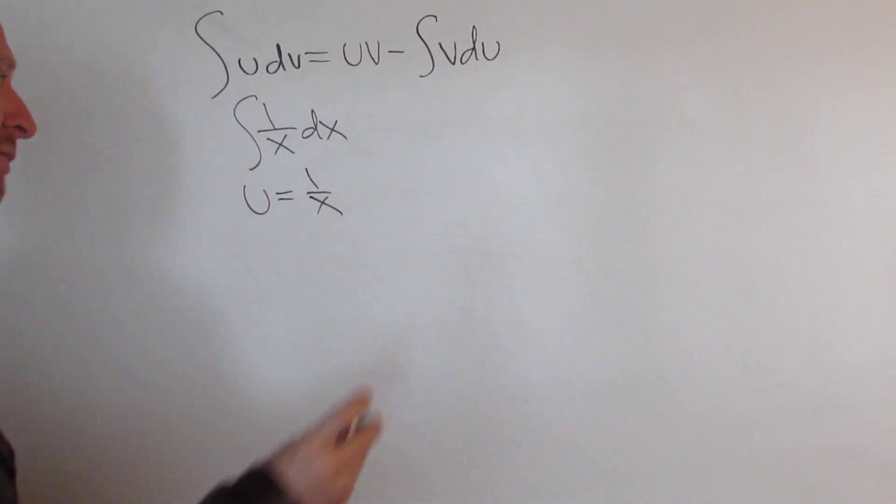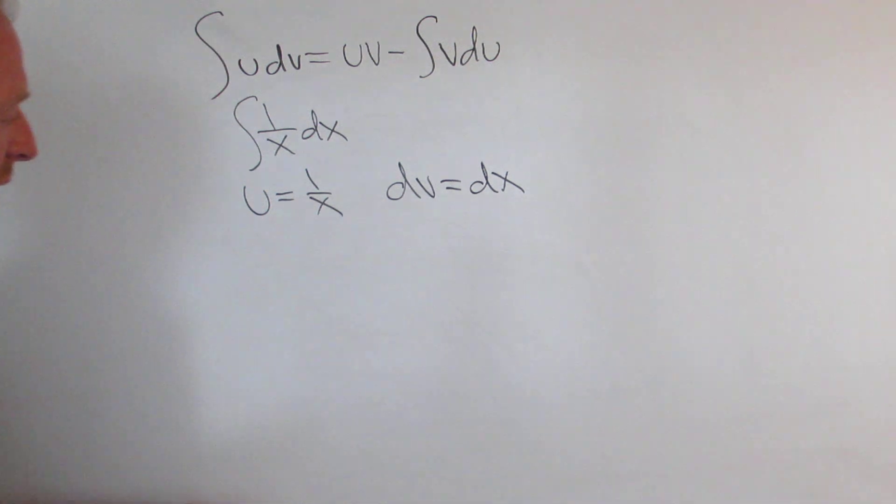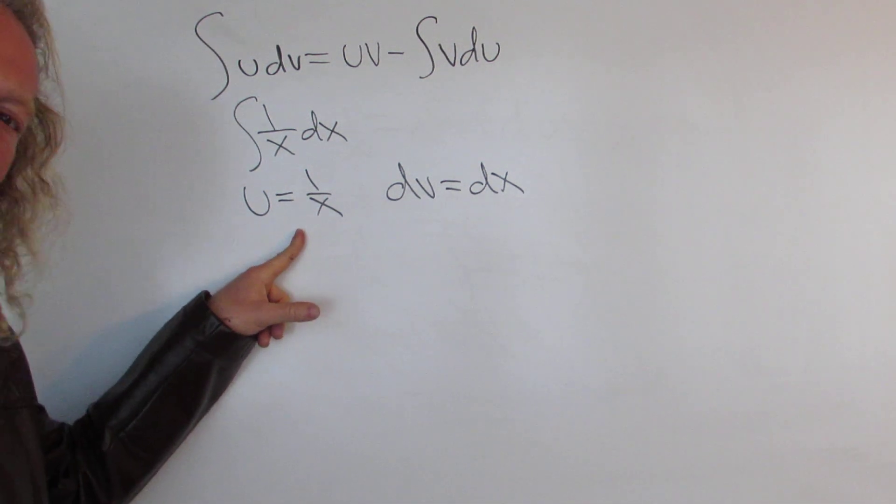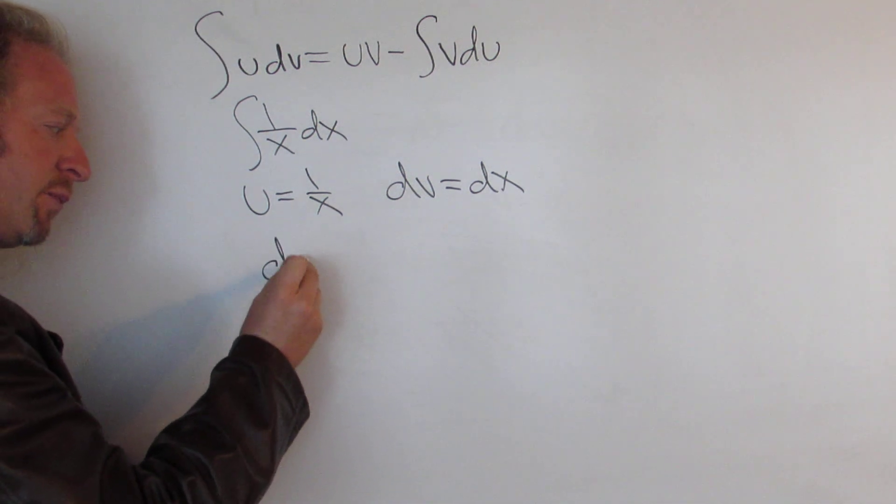And then our dv will just be dx. So dv is dx. And then now we have to compute du, right? The derivative of 1 over x. I have it memorized, I just know it's negative 1 over x squared dx.